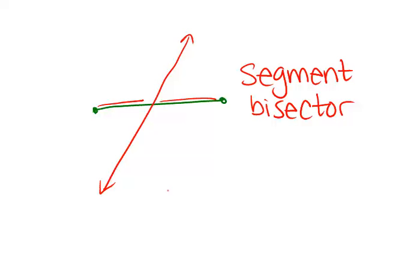They meet at 90 degrees. So an example of that would be, here's our segment, and then draw in a perpendicular line. And assuming that this distance is the same as this distance, then that is a perpendicular bisector.